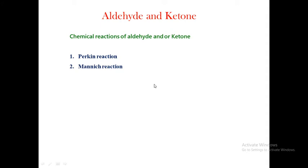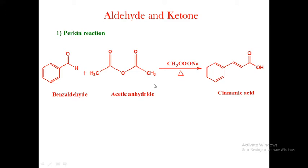Number one is the Perkin reaction, and another is the Mannich reaction. We will also see the mechanism of the Perkin reaction. First, the definition of the Perkin reaction: when benzaldehyde is reacted with acetic anhydride in the presence of sodium acetate as a catalyst at 180 degrees Celsius to form cinnamic acid, i.e., an alpha-beta unsaturated acid, this is known as the Perkin reaction.